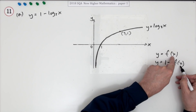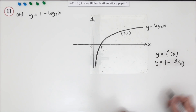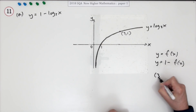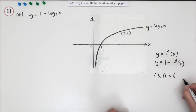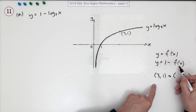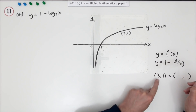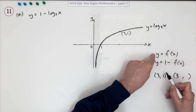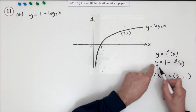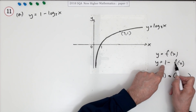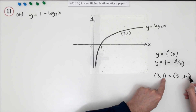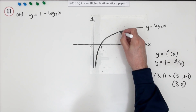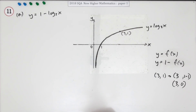Nothing's happening to x inside, so there are no changes in x. One way of doing this is just to pick a known point — what happens to the point (3, 1)? Nothing happens to x, so x stays the same. The new y will be 1 minus the old y, which is 1 minus 1, so that point should go to (3, 0).